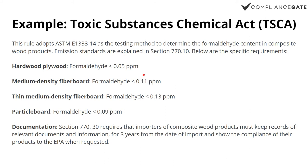Let's look into TSCA — we go into more detail on the website if you want to learn more. Just to give an idea of how these formaldehyde restrictions work in practice: this regulation references ASTM E1333-14 as the testing method and also sets certain limits. For hardwood plywood the formaldehyde limit is set to 0.05 ppm, whereas it's a bit higher for particle board. There are also documentation requirements — you need to not just claim compliance but keep some sort of record, such as a test report.